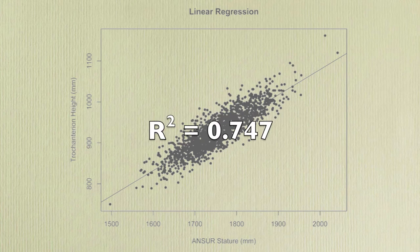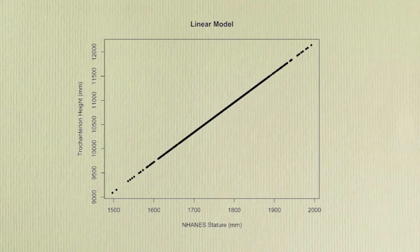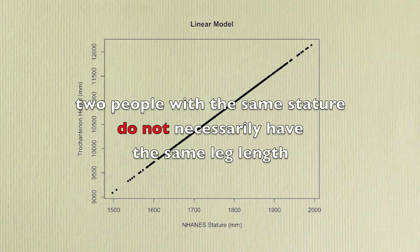To create trochanterian heights for n-hans using linear regression, we apply the linear equation using the n-hans statures. Similar to using proportionality constants, using this method results in a lack of variability in the population, as these trochanterian heights are created through the assumption that two people of the same stature would have the same leg lengths, which is a false assumption.